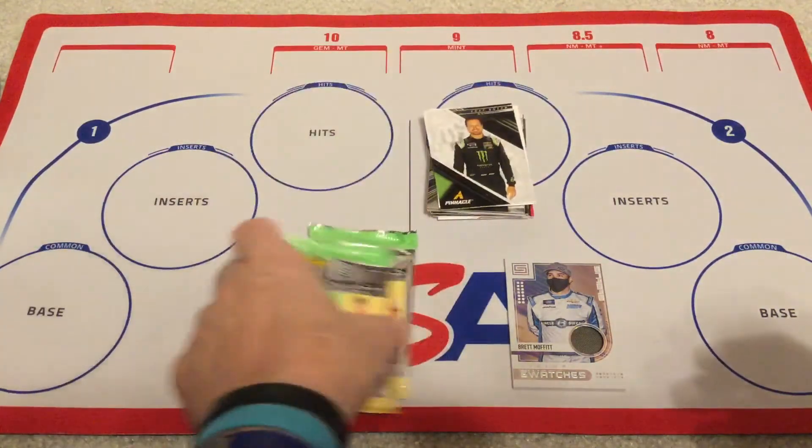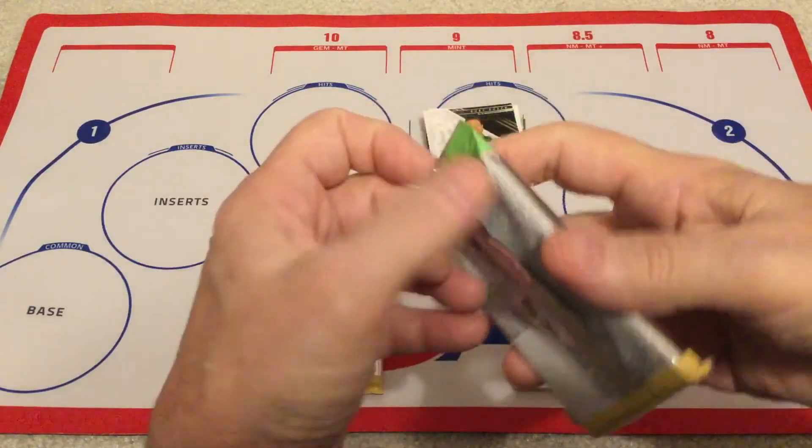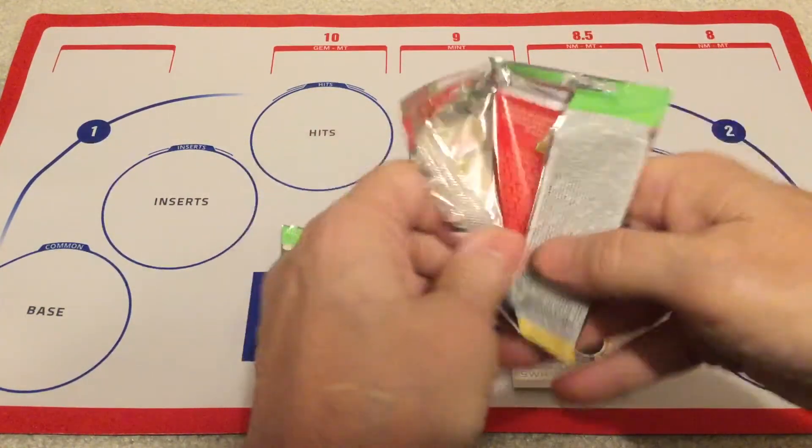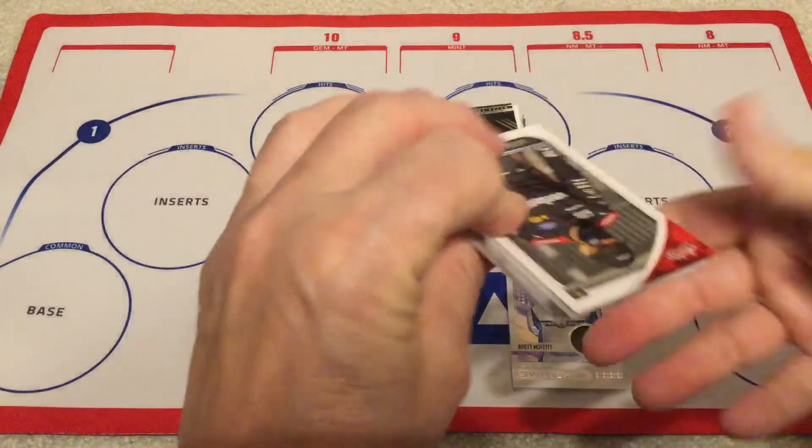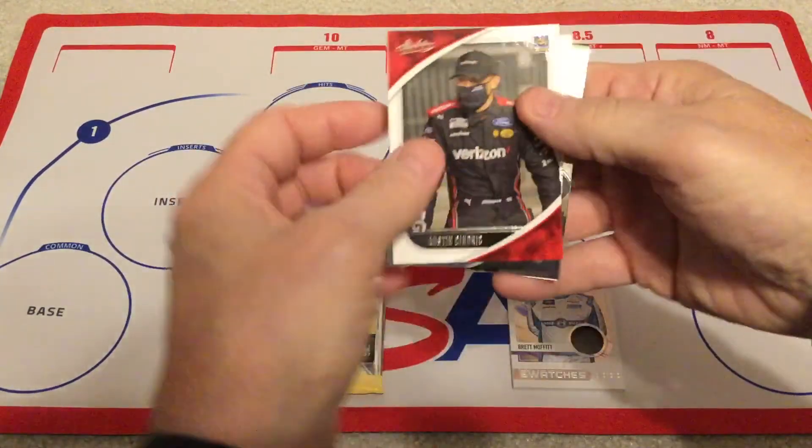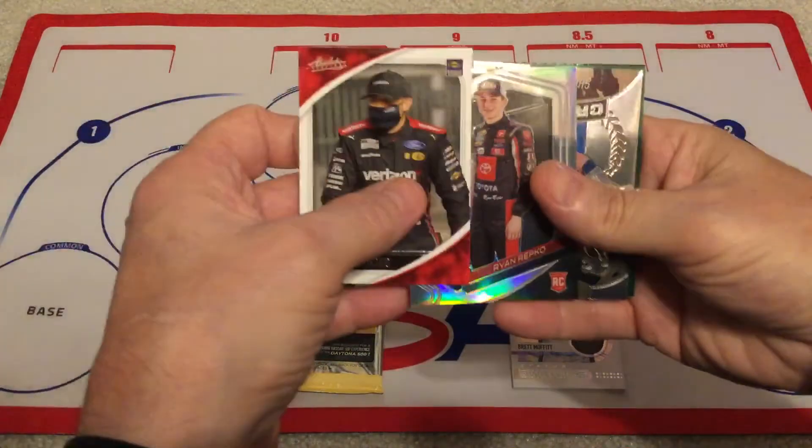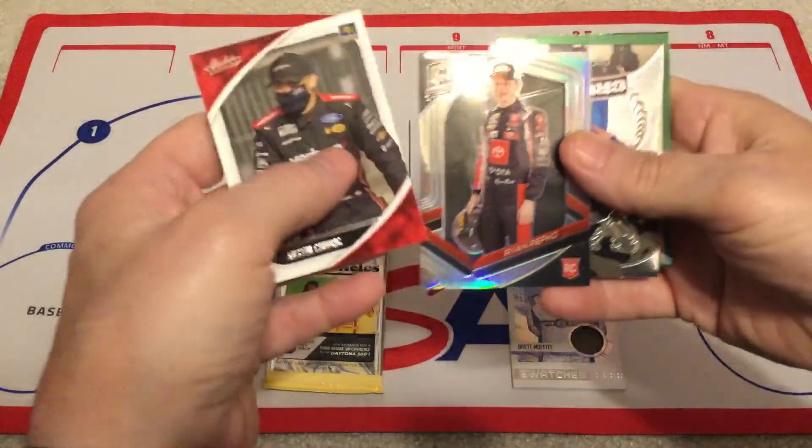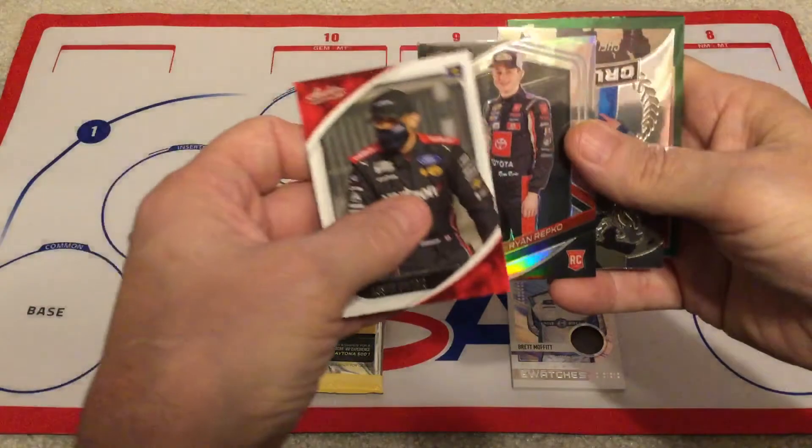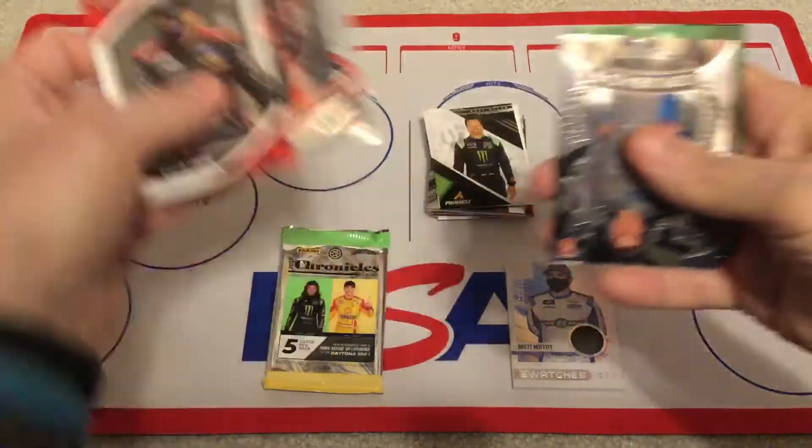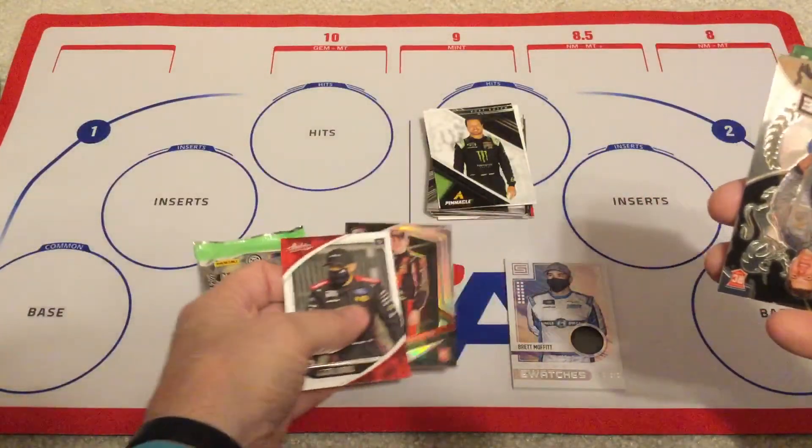All right. Here's the next pack. This is a thicker one. So, this is going to be Spectra. So, there's Austin Sendrick in Absolute. And we got Ryan Repco in Spectra. Not too bad. Let me set that down here somewhere.